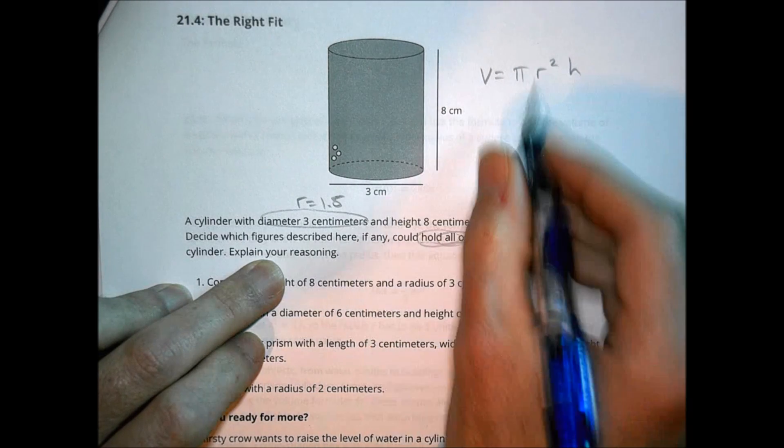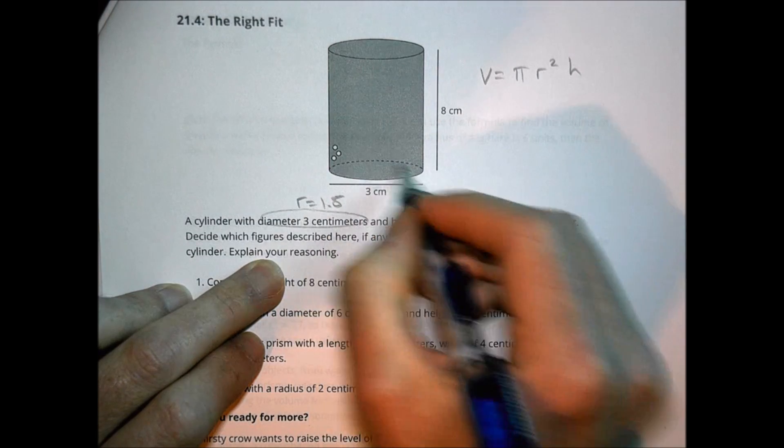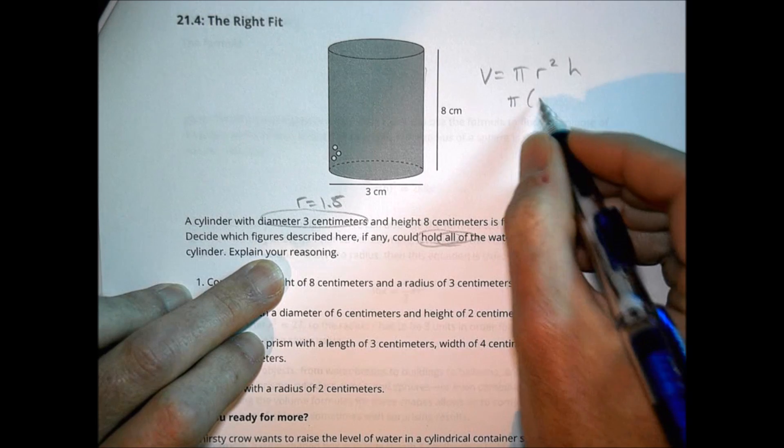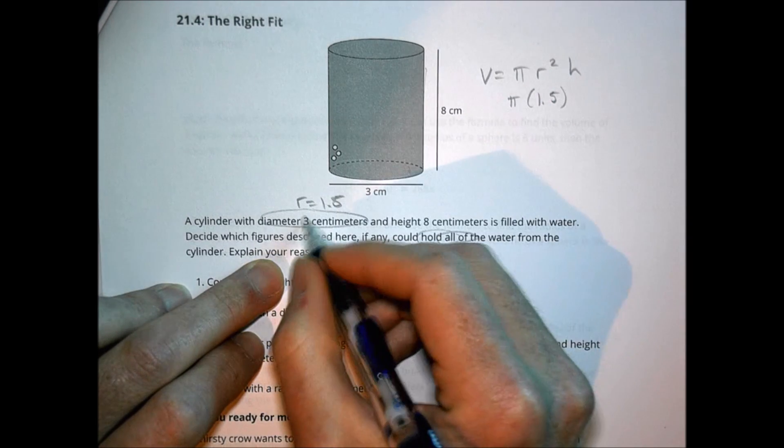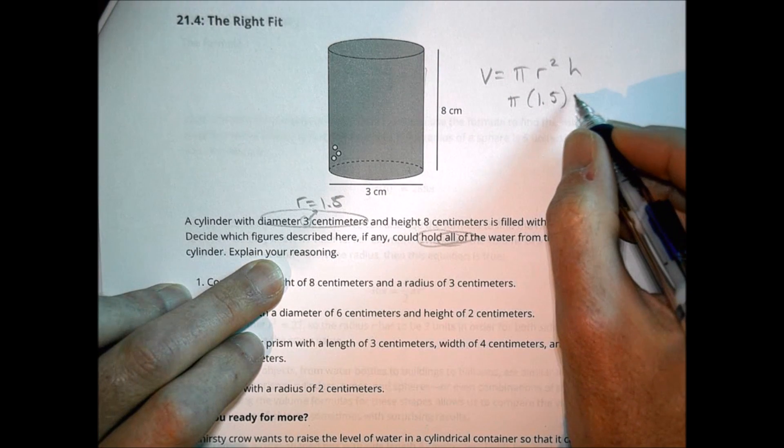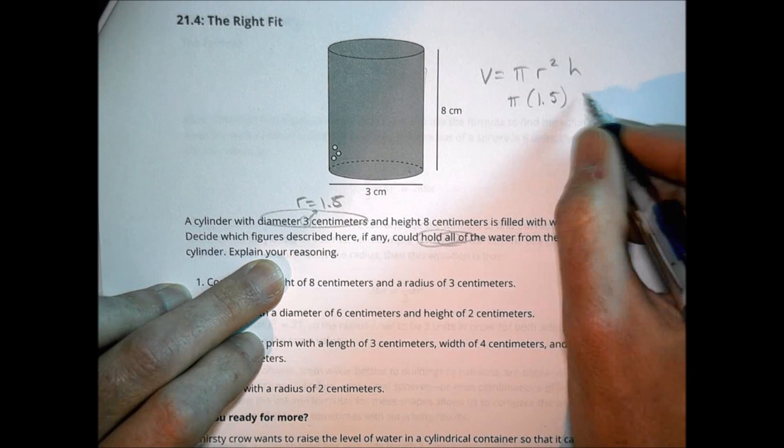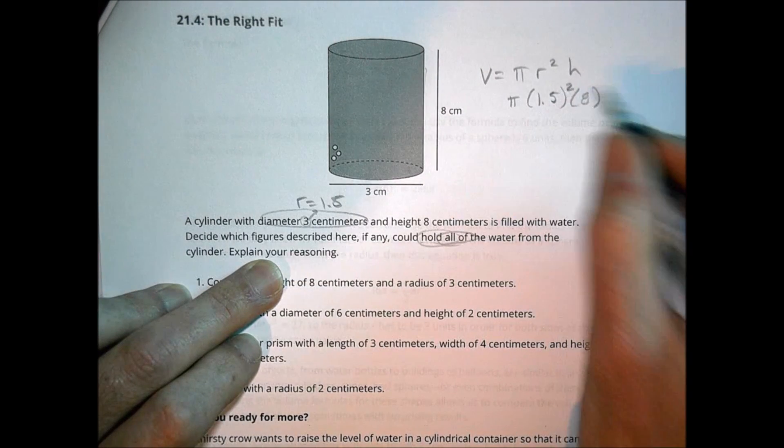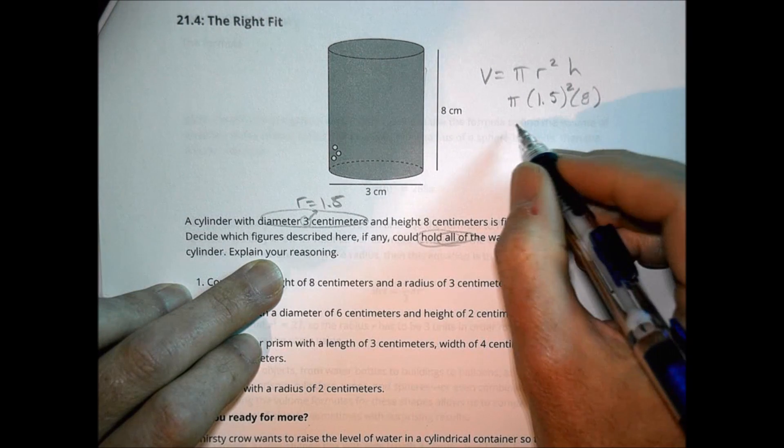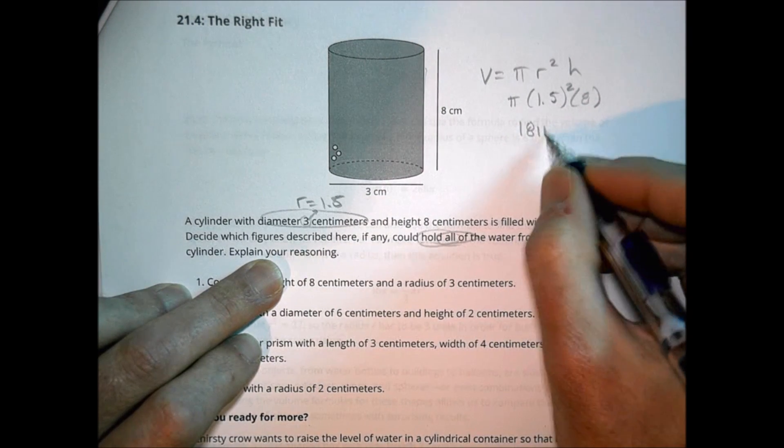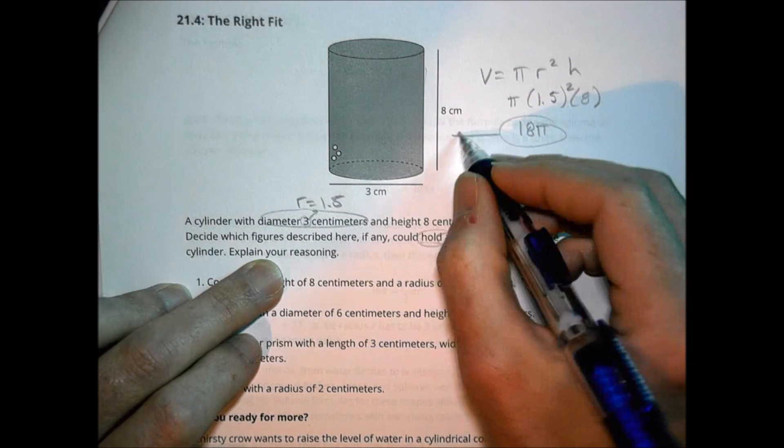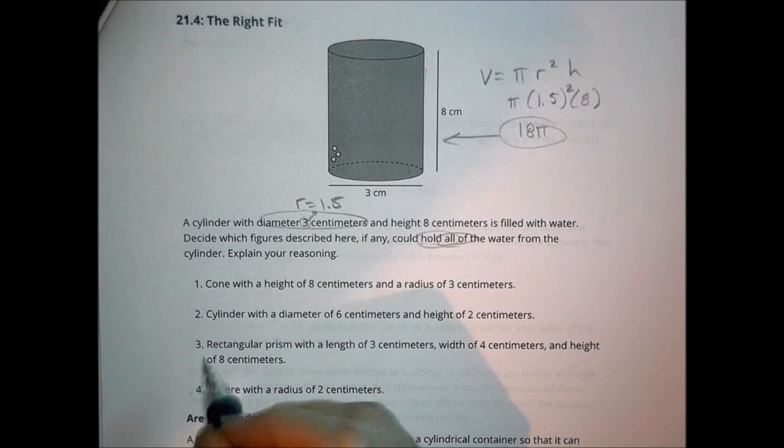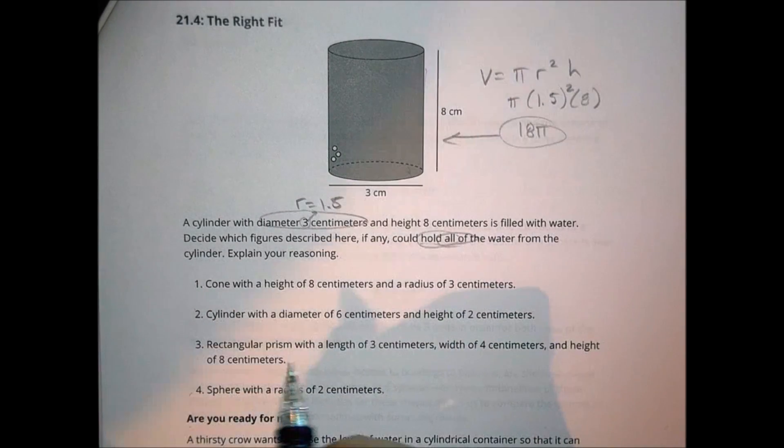So let's see how much water goes in here. So this cylinder has a volume of pi times the radius squared times the height. Pi r squared is the area of the base times the height. Now our pi is still pi. Our radius is 1.5 because it gave us diameter of three, so half of that's 1.5. And then we're going to multiply by the height, which it says was eight. So eight times 1.5 squared, 1.5 squared is going to be 18 pi.